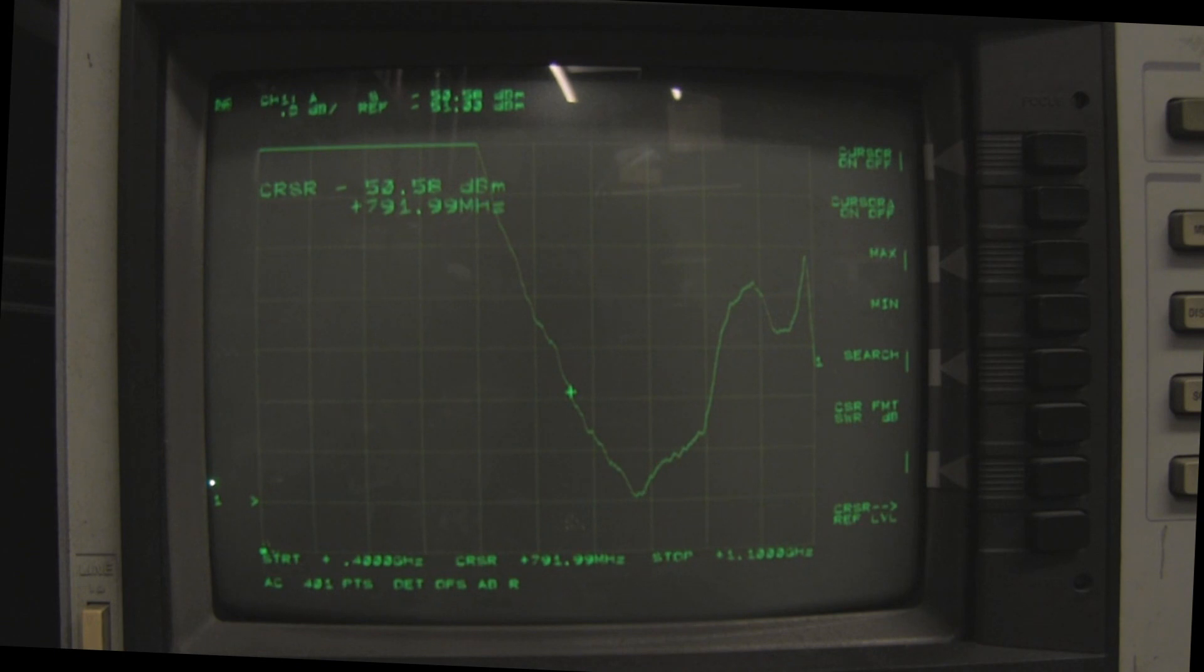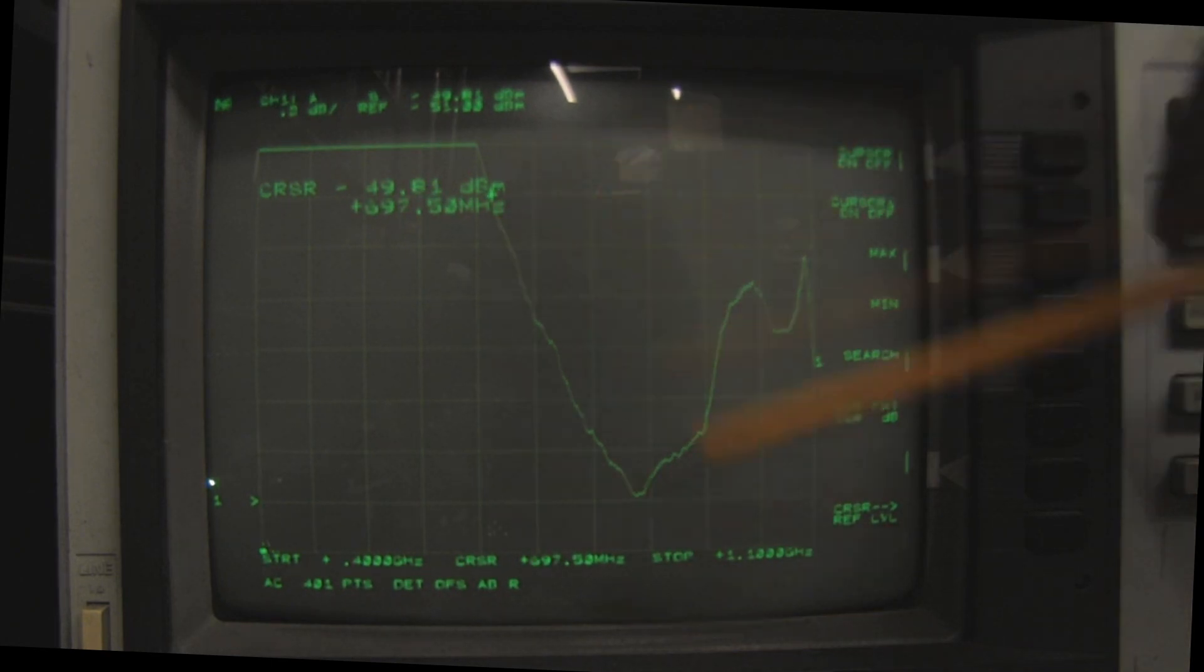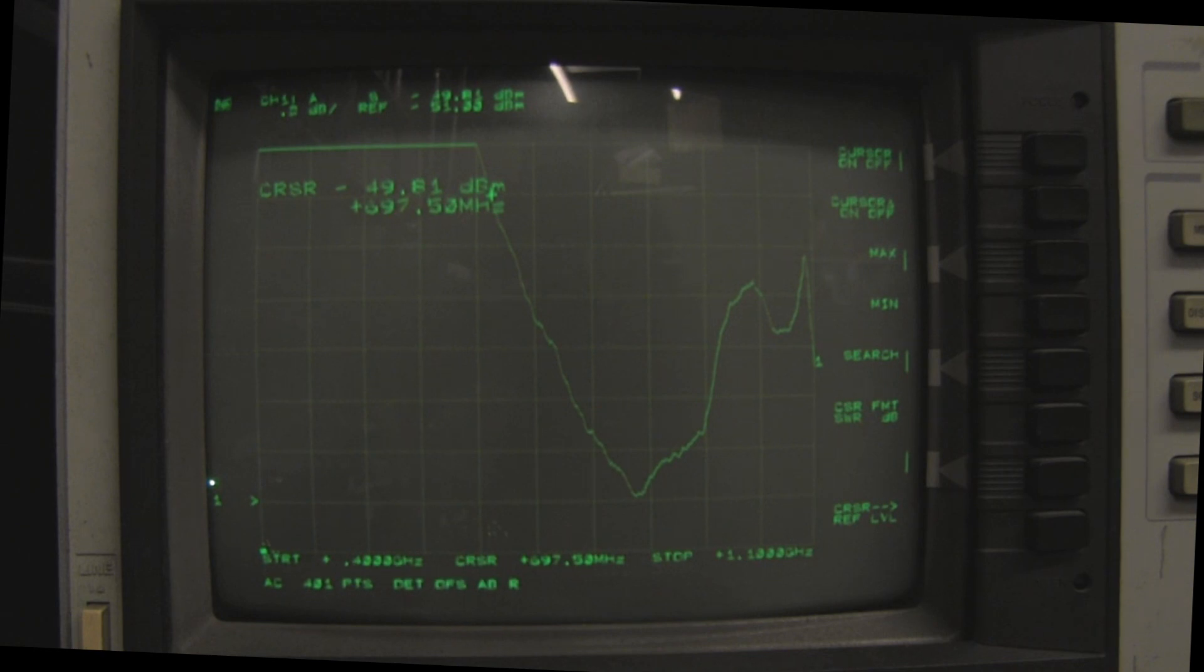Here we are on the network analyzer looking at our first set of frequencies, 698 megahertz up to 960 megahertz. I'm scanning from 400 megahertz over here and I'm zoomed in cutting that off. We're scanning up to 1100 megahertz which is here. All the first group of frequencies are all in this big dip here.